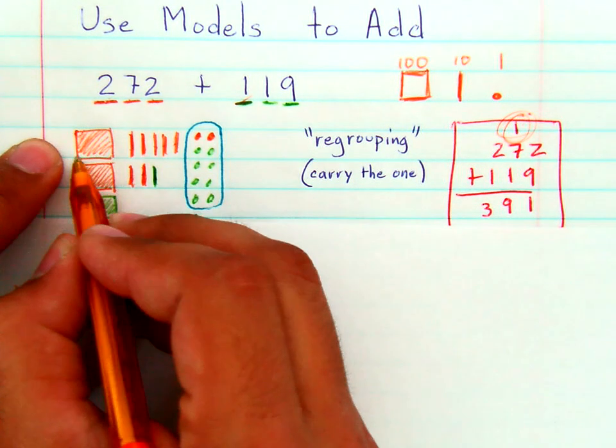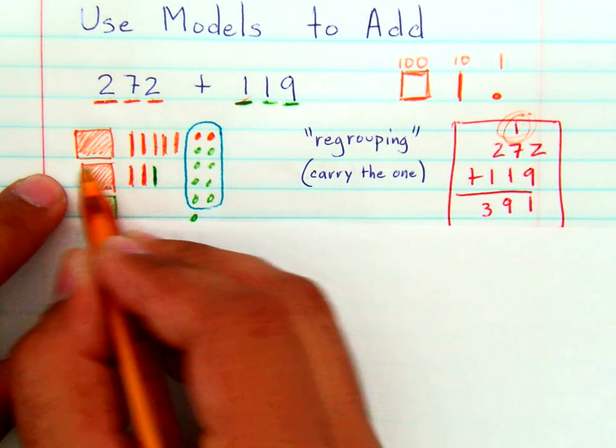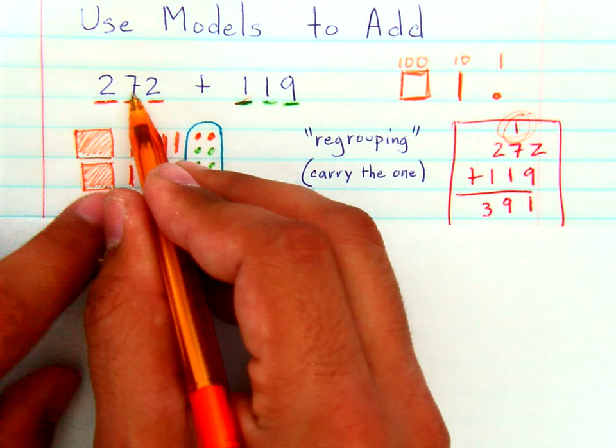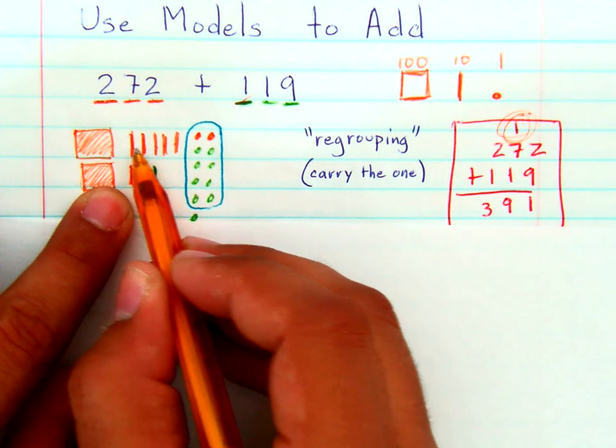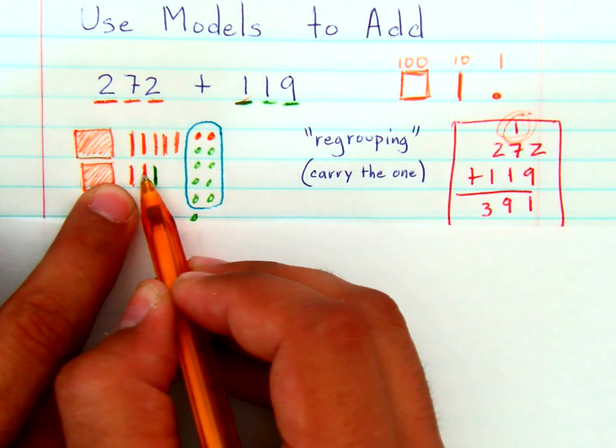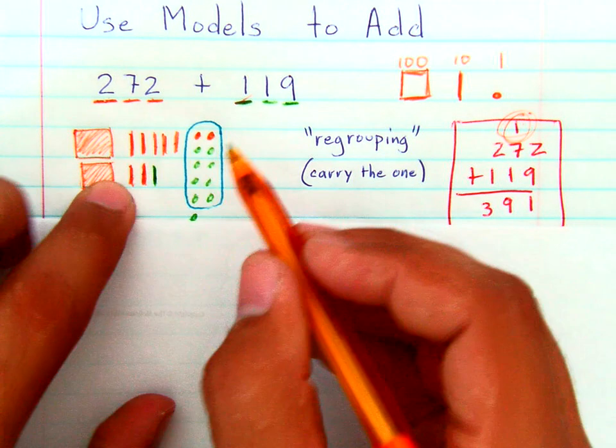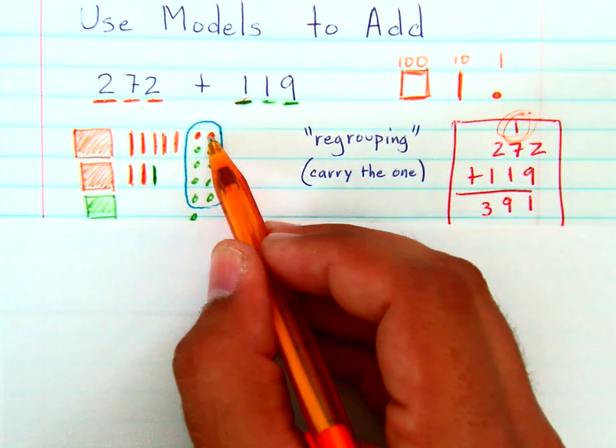So 200, represented by 2 squares. 7 tens, represented by 7 lines, 10, 20, 30, 40, 50, 60, 70. And 2 ones, represented as 1, 2 dots.